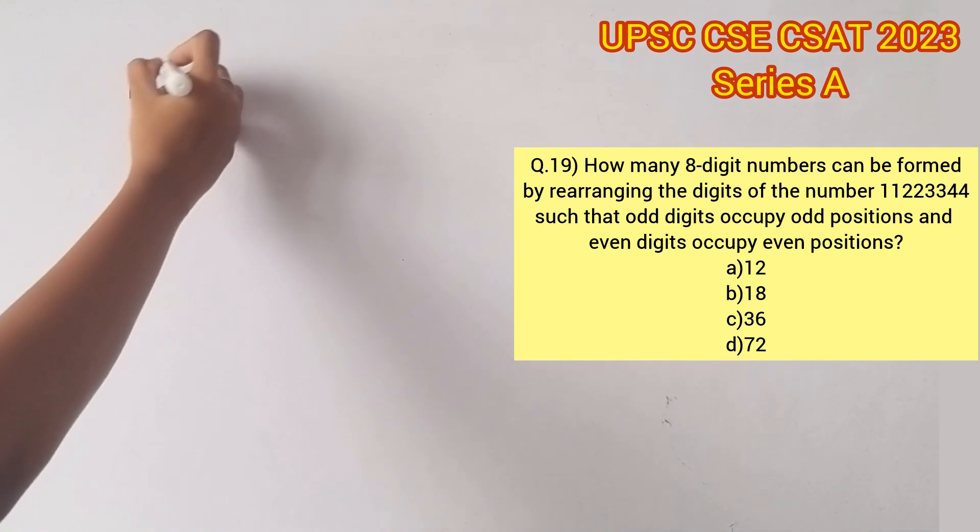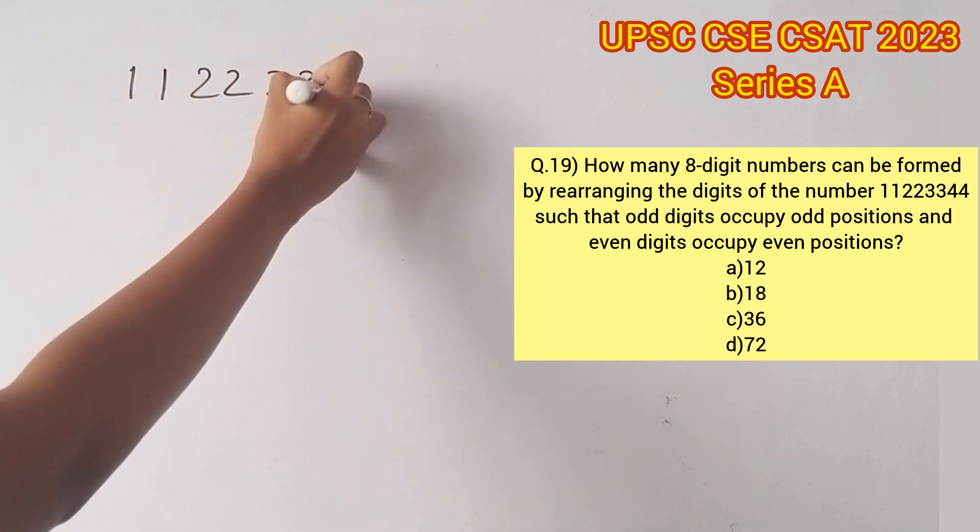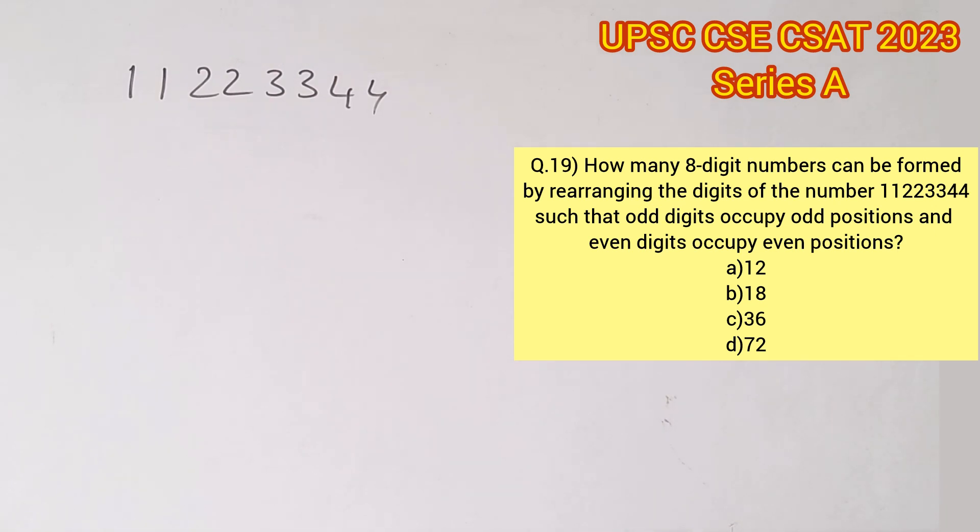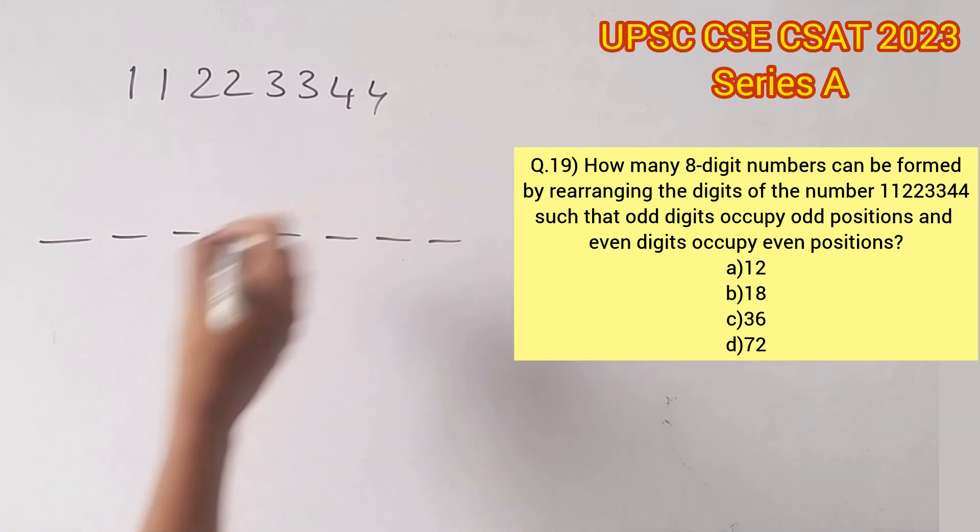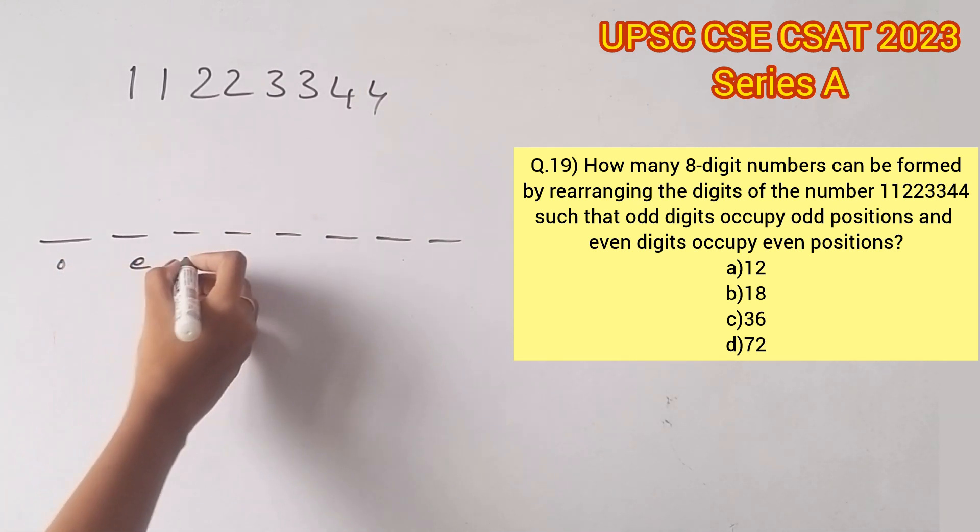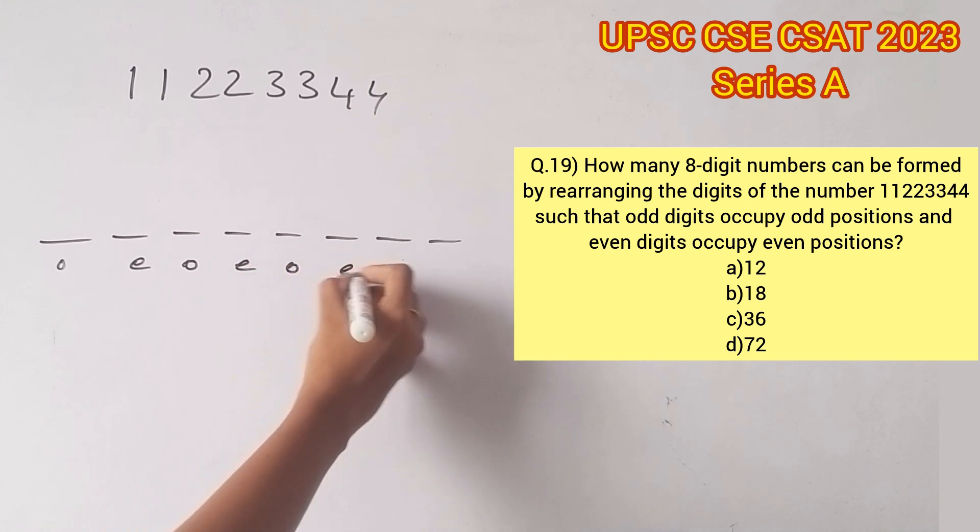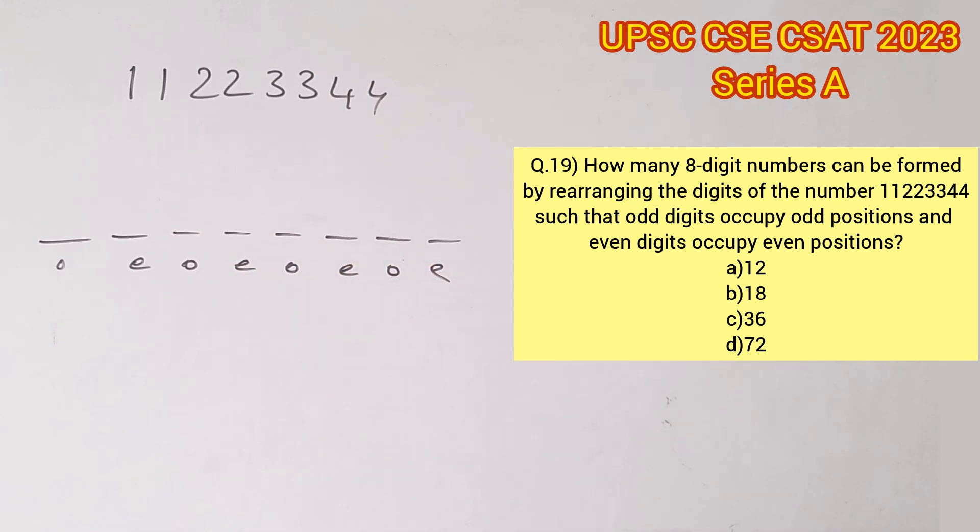Welcome to Aptitude Destination. Please pause the video and read the question completely. We are given certain digits 1, 1, 2, 2, 3, 3, 4, 4, out of which we are supposed to find the number of ways it can be arranged to form an 8-digit number where the odd digits occupy odd positions and even digits occupy even positions.